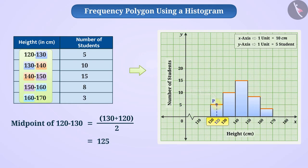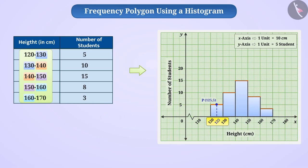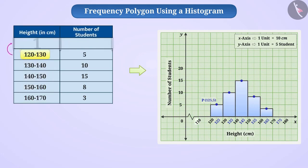Let P be the middle point obtained. The coordinates of point P are 125 and 5. Similarly, we will find the midpoint of the upper sides of all the rectangles. We assume that the class interval before 120 to 130 is a hypothetical class interval of 110 to 120 with a frequency of 0 — that is, the height of no student falls in this class interval.